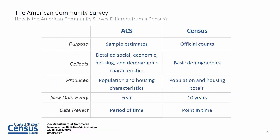Let's compare the ACS with the Decennial Census. ACS estimates are based on a sample of the population, whereas the Census is based on the official count of the population. Every year, over 3.5 million housing unit addresses are contacted to participate in the ACS. However, these estimates differ from those obtained in the Census where every household in the nation is contacted. This results in an element of uncertainty in the ACS data. As such, ACS estimates include a margin of error, or MOE, which tells us how much the estimate may vary from the true population value.